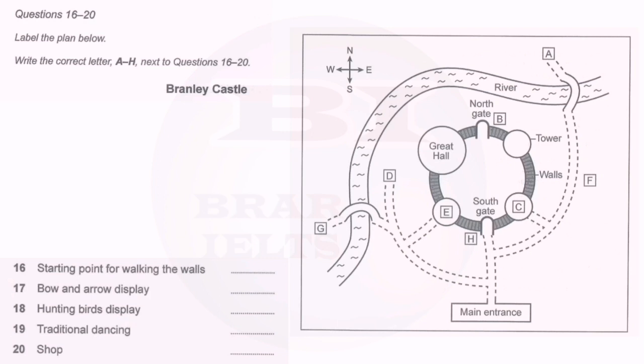There'll shortly be a show in which you can see archers displaying their skill with a bow and arrow. The quickest way to get there is to take the first left after the main entrance and follow the path past the bridge. Then you'll see it in front of you at the end.